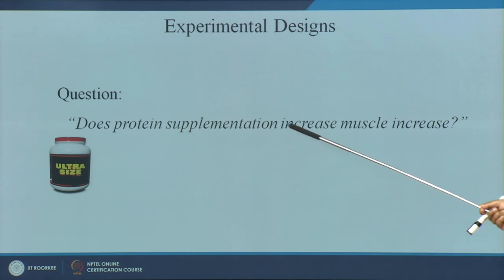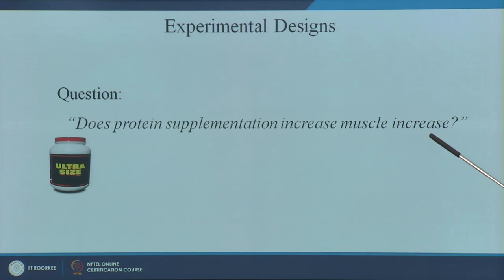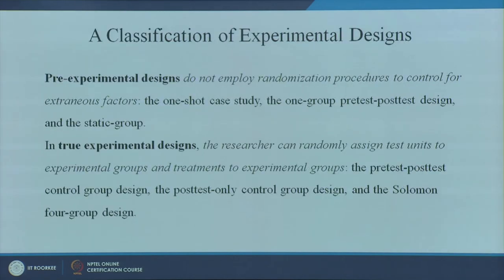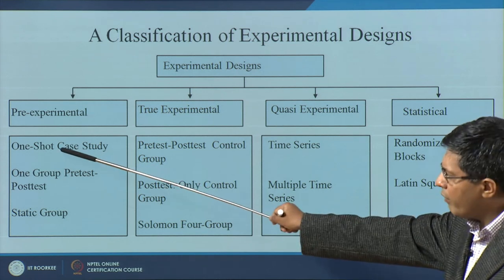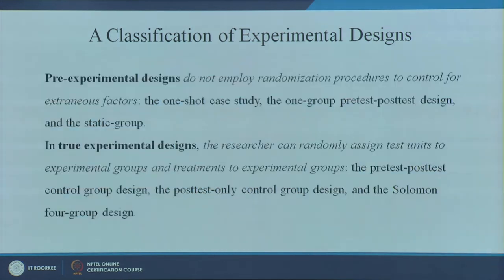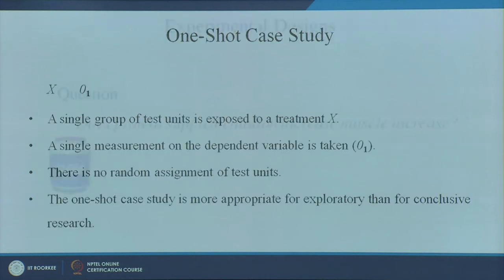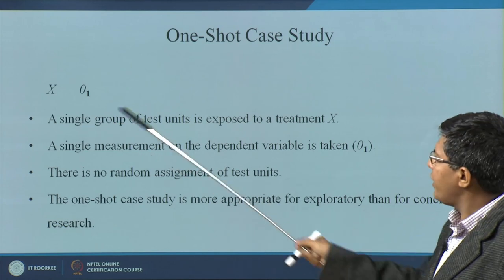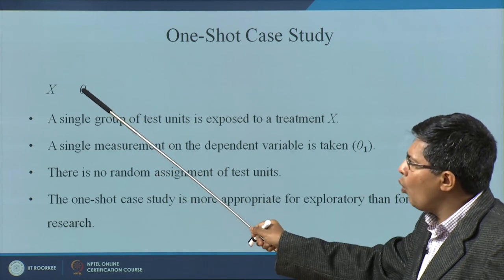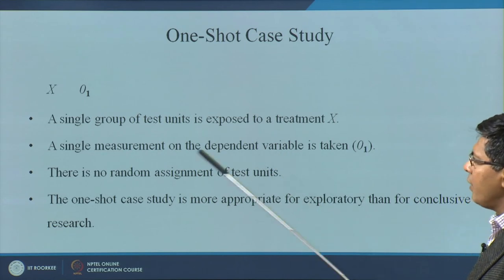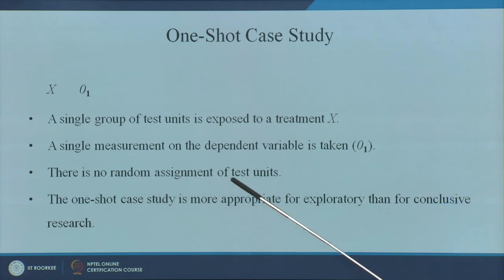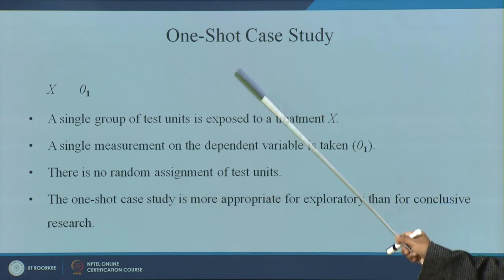The example question is: does protein supplementation increase muscle? In the one-shot case study, a single group of test units is given treatment X, and O is the observed value — a single measurement on the dependent variable. There is no random assignment in the one-shot case study.